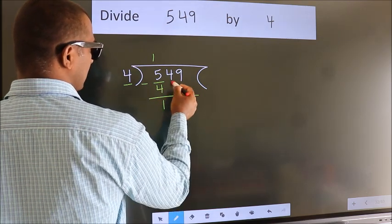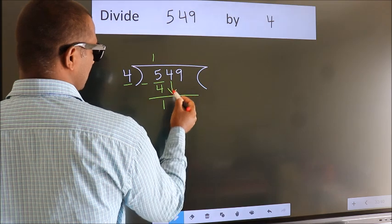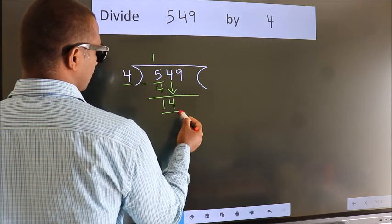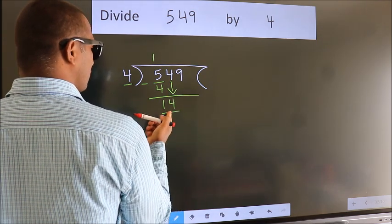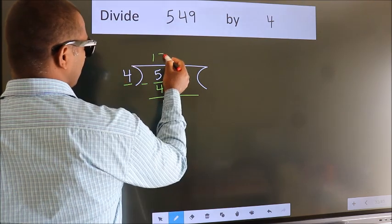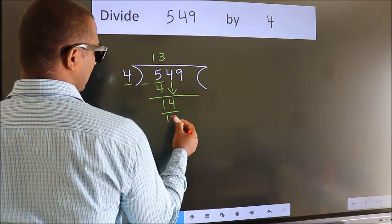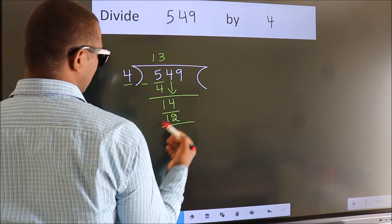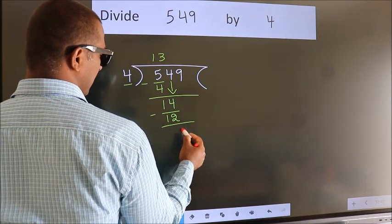After this bring down the beside number. So 4 down. So 14. A number close to 14 in 4 table is 4 threes 12. Now we subtract. We get 2.